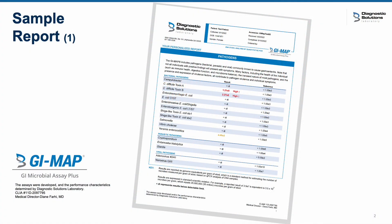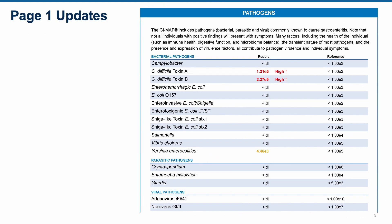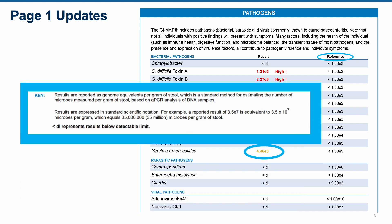Starting with page one: while the pathogenic targets remain the same, we've added color to the result bar for easier readability. Detected low levels that fall below reference range are now flagged in yellow to call your attention to the clinical relevance of low-level gut pathogens. The values to the right of the page are now reported as 'reference' instead of 'normal' — this terminology change denotes lab-determined cutoff values correlated with disease. A key is now provided at the bottom of the page to describe exponential reporting and to define 'less than DL,' which means below detection limit.